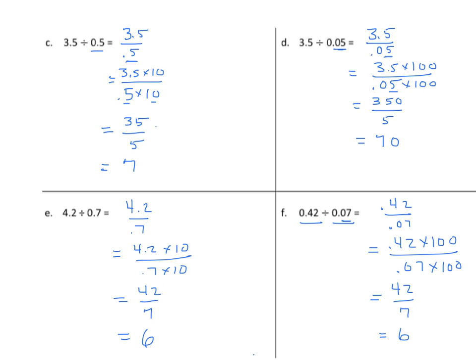We always look at the denominator to figure out what we're going to multiply both the numerator and the denominator by. Problems C and E go to tenths, so I multiply by 10. D and F go to hundredths, so I have to multiply by 100. The key thing we want to do is get rid of our decimals. By creating an equivalent fraction, that allows us to do division facts as we customarily do them.